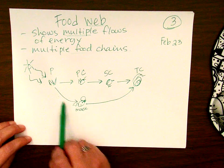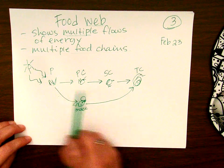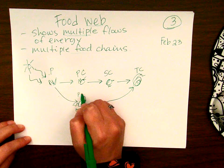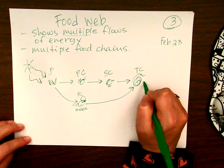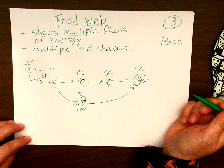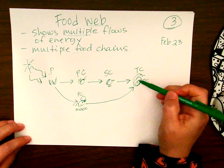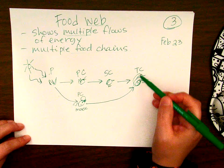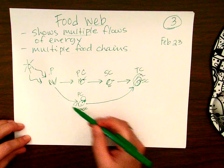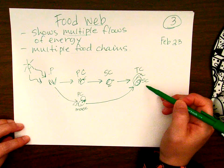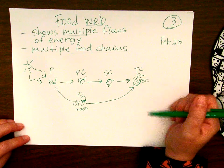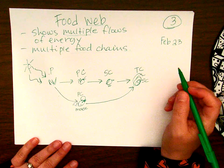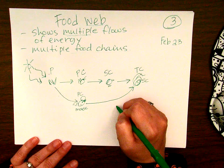Snakes like to eat mice, so this right here is its own food chain: producer, primary consumer, secondary consumer. Notice the snake is a tertiary consumer in the first food chain, but in this food chain with the mouse, the snake is a secondary consumer. So he's playing different roles depending on the chain.